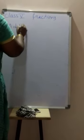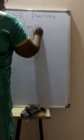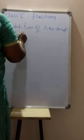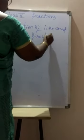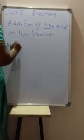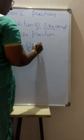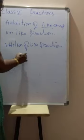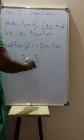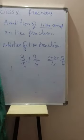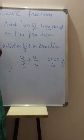Now let's look at addition of like and unlike fractions. First, addition of like fractions — it is very easy. The denominators are the same, so you just add the numerators. For example, 3 plus 2 over 4 — you get 5 by 4. That is an improper fraction.